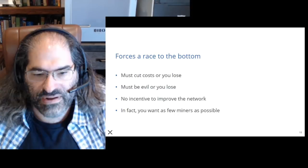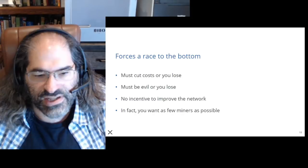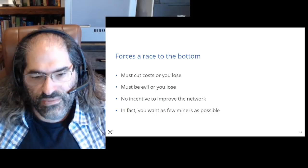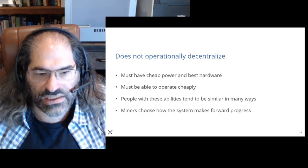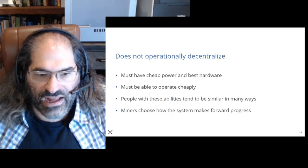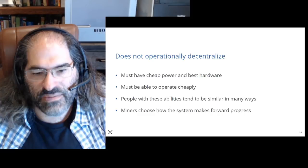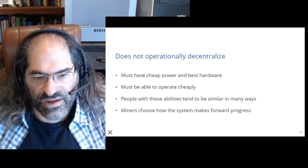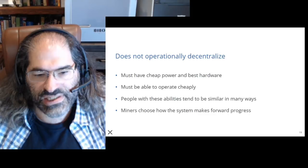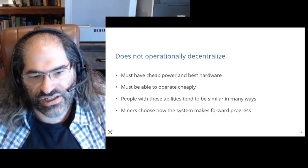Miners can switch blockchains and aren't really interested in the long-term growth of the network. Natural stakeholders want as few miners as possible for whatever level of security they need — having many more miners than required is just additional cost. The people who mine tend to look similar: cheapest power, best ASICs. They tend to mostly be in China and to be companies of certain sizes. Miners choose how the system makes forward progress — that's what protects operational decentralization.